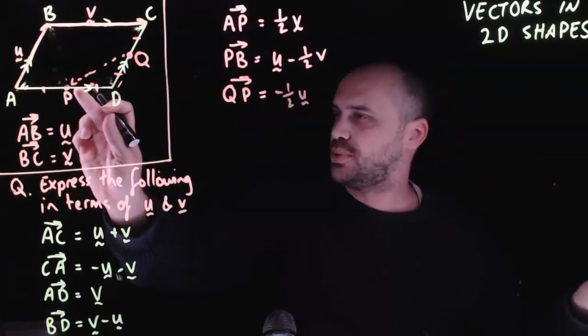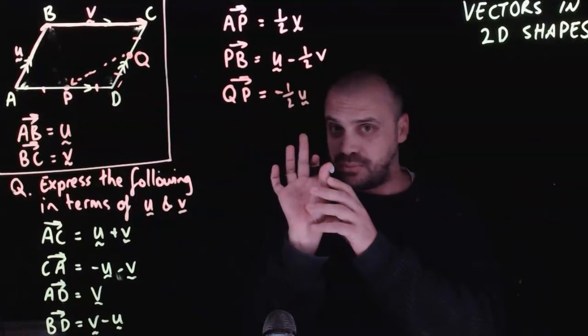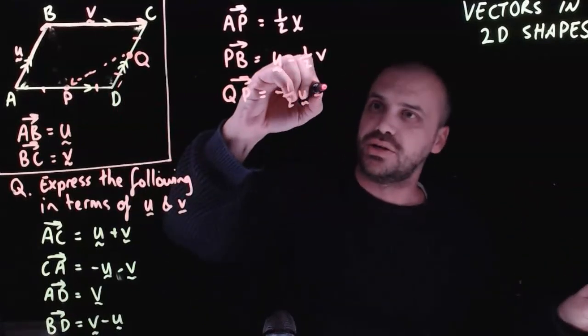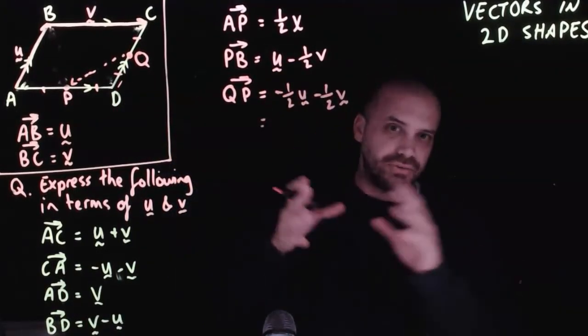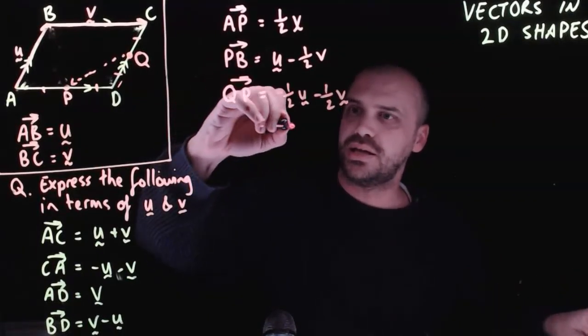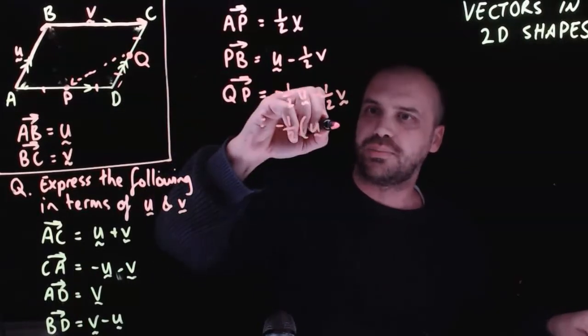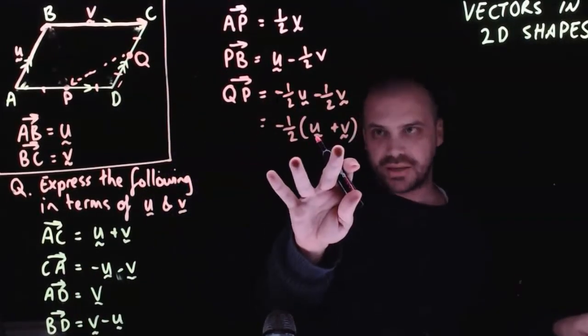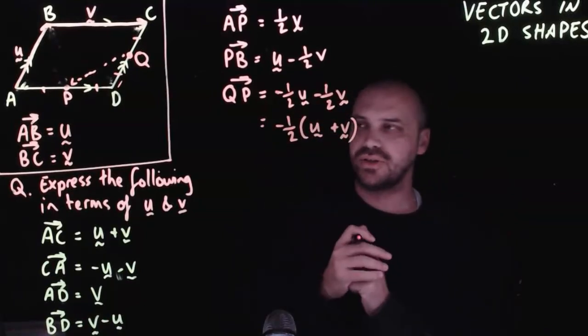And then from D to P is along the V vector, a half, but in the negative direction. So negative one half V. It would be neater to factorize this and write it as negative one half vector U plus V. If you expand that, you'll end up back where we started. But that's a little bit neater than that.